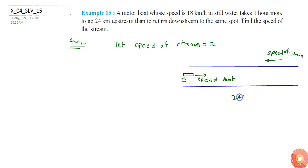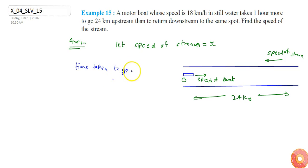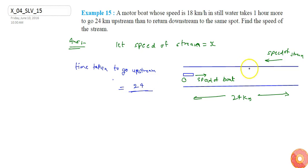Let's say the distance upstream is 24 kilometres. So we can say that the time taken to go upstream will be — since the boat goes against the speed of the stream — distance divided by speed. So the speed of the motorboat going upstream will be 18 minus x.